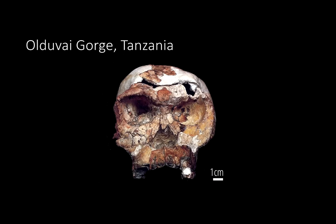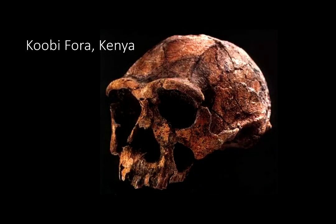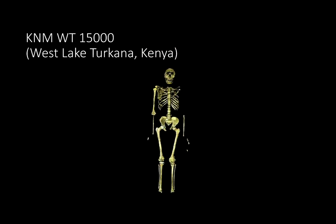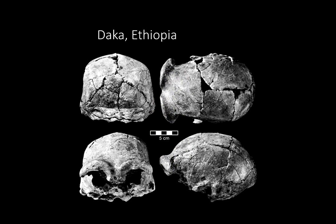An early representative in the genus Homo from about 1.8 million years ago, found from the sediments at the base of the Olduvai Gorge deposits. Another skull about 1.75 million years ago from Kenya, a site called Kubi Fora. An almost complete skeleton of a juvenile boy who died 1.6 million years ago from a site called West Lake Turkana, also in Kenya. And different views of a cranium that belonged to a member of Homo erectus 1 million years ago.